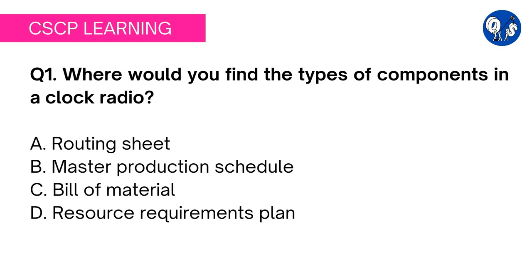master production schedule. Option C: bill of material. Option D: resource requirements planning. Before we start, let me rephrase this question so that everybody can understand it. The examiner wants to know what kind of components or parts are used in manufacturing a clock radio.